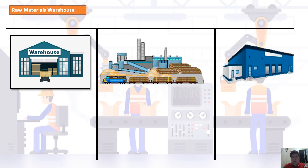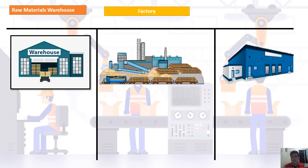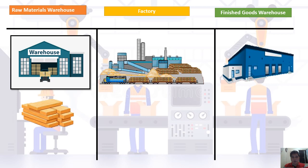In the first department, the raw materials warehouse, all raw materials are stored before being sent to production. They are not sent to the factory immediately because they are not processed right away. For the meantime, they are placed in the raw materials warehouse first — all received materials are stored here.